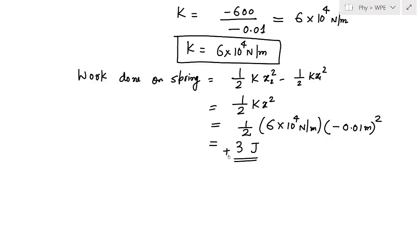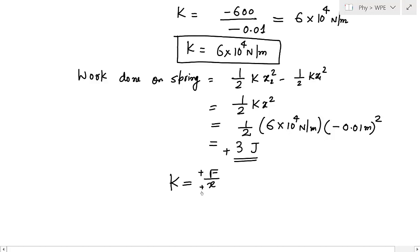In this problem I used the sign convention that the upward direction is positive. You can also solve the same problem by considering the downward direction as positive. In that case, displacement of the spring and force in the downward direction will both be positive, and you will get the same answer. It does not matter what sign convention you use, but be consistent with it for a given problem. Hope you liked this video. See you in the next video. Thank you.